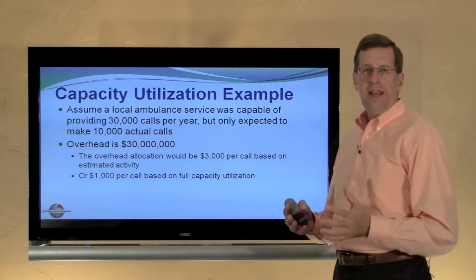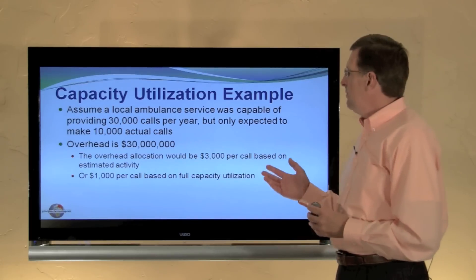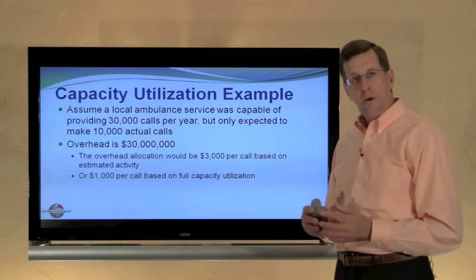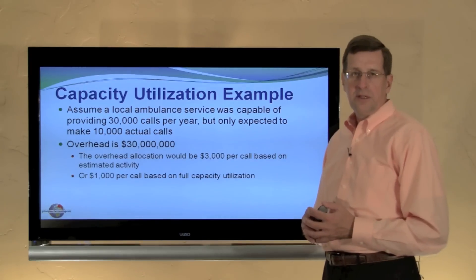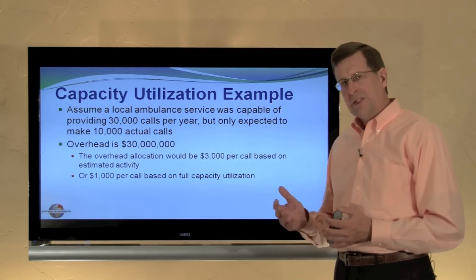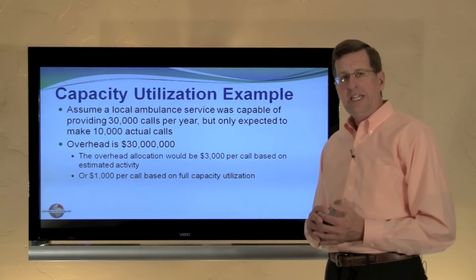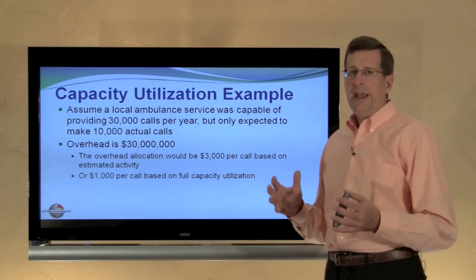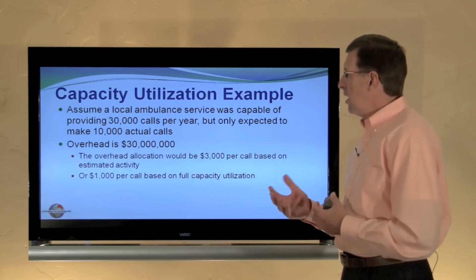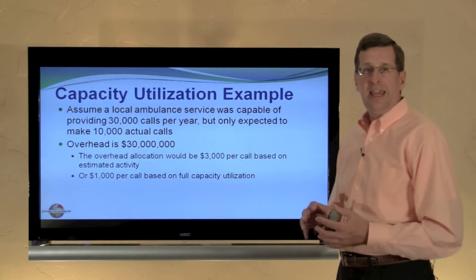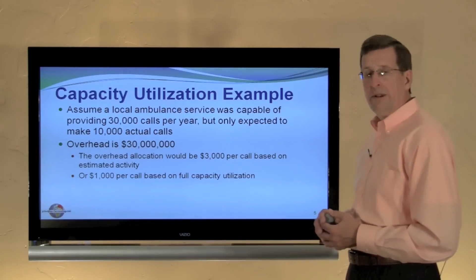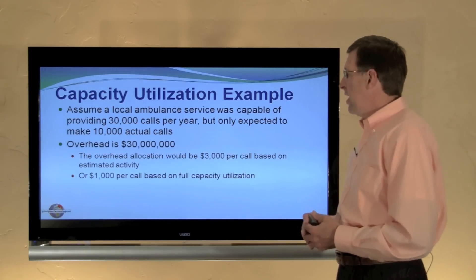Let's look at an example for an ambulance company. Assume the ambulance company is capable of making 30,000 calls per year, but actually only expects 10,000. The first thing you may think is, well, that's excess capacity — that's wasteful. But we may need the extra capacity for peak emergency periods, and so a lot of times the ambulances are waiting with nothing happening, and that's perfectly fine. That's part of the model we need to have in place for the security of the people we're trying to serve.